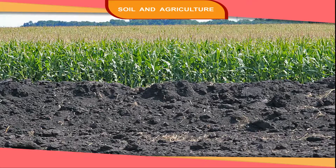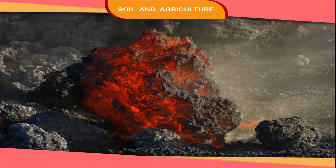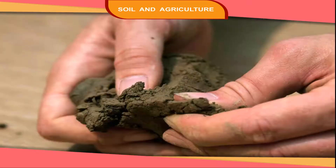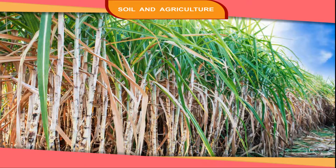Black soil is found in the north-western parts of the southern plateau. It is made from the decomposition of volcanic lava deposits. Black soil is sticky and can hold water. It is good for growing cotton and sugarcane.